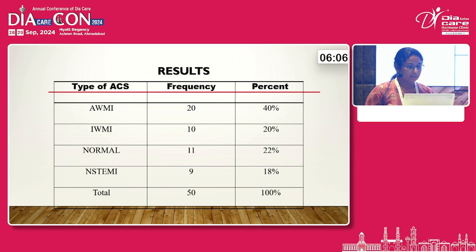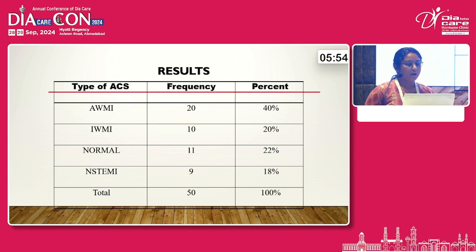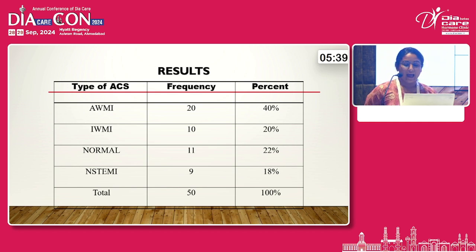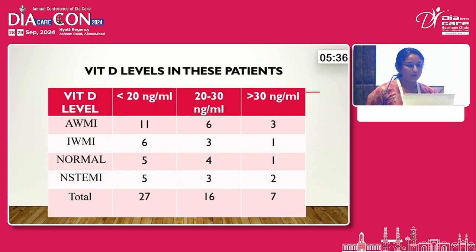The results by types of ACS: anterior MI had a frequency of 20, representing 40%. Inferior MI had a frequency of 10, representing 20%. Normal patients with vitamin D deficiency had a frequency of 11, representing 22%, and SEMI had a frequency of 9, representing 18%. Total patients with vitamin D deficiency were 50, or 100%. For anterior MI, vitamin D less than 20 ng/mL was found in 11 patients, 20–30 ng/mL in 6 patients, and more than 30 in 3 patients.